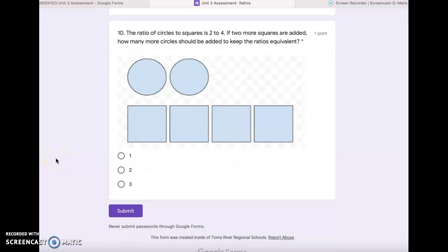And number 10. The ratio of circles to squares is 2 to 4. If two more squares are added, how many more circles should be added to keep the ratios equivalent or equal? 1, 2, or 3?